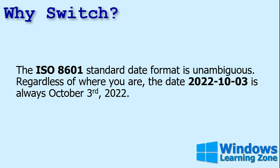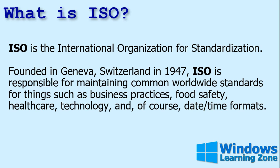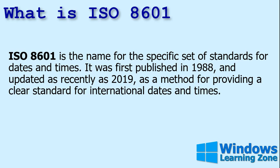The ISO 8601 standard date format is unambiguous. Regardless of where you are, the date 2022-10-03 is always October 3rd, 2022. You've probably heard of the ISO before — it's the International Organization for Standardization, founded in Geneva, Switzerland in 1947. They're responsible for everything from business practices and food safety to healthcare technology, and of course, date-time formats. 8601 is the name for a specific set of standards for dates and times, first published in 1988, and recently revised as of 2019.